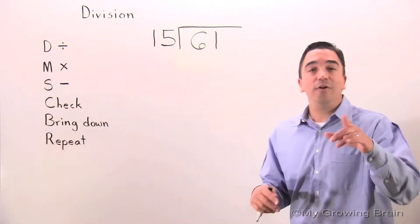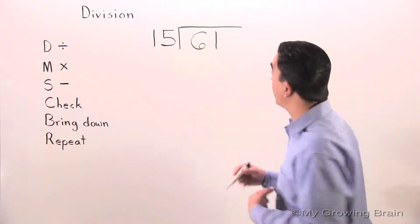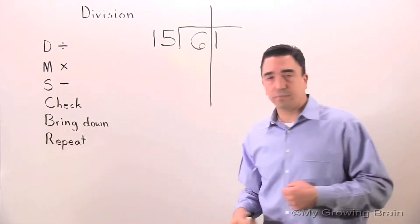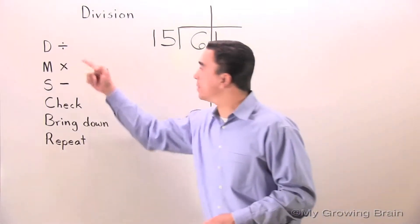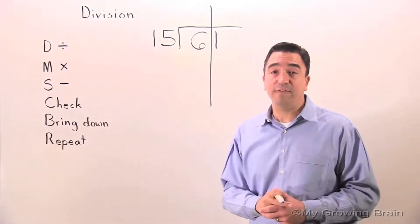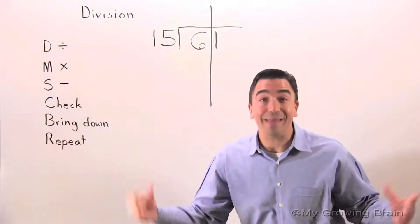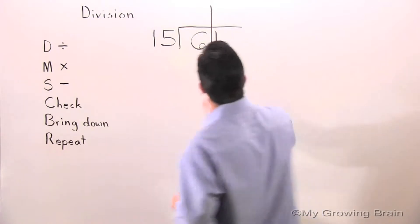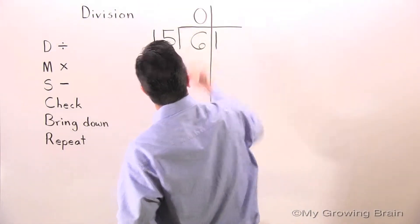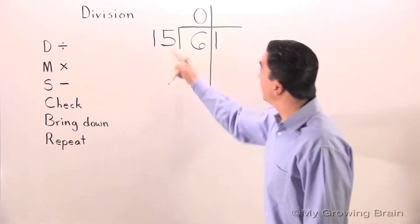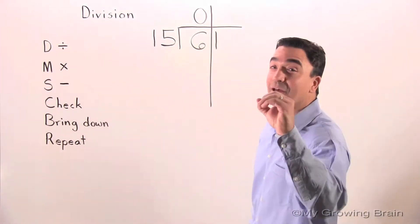Let's get to it. First thing I'm going to do is organize my problem. First step: 6 divided by 15, or 15 into 6. Can't do it. Use a 0. Next step, multiply: 15 times 0 equals 0.